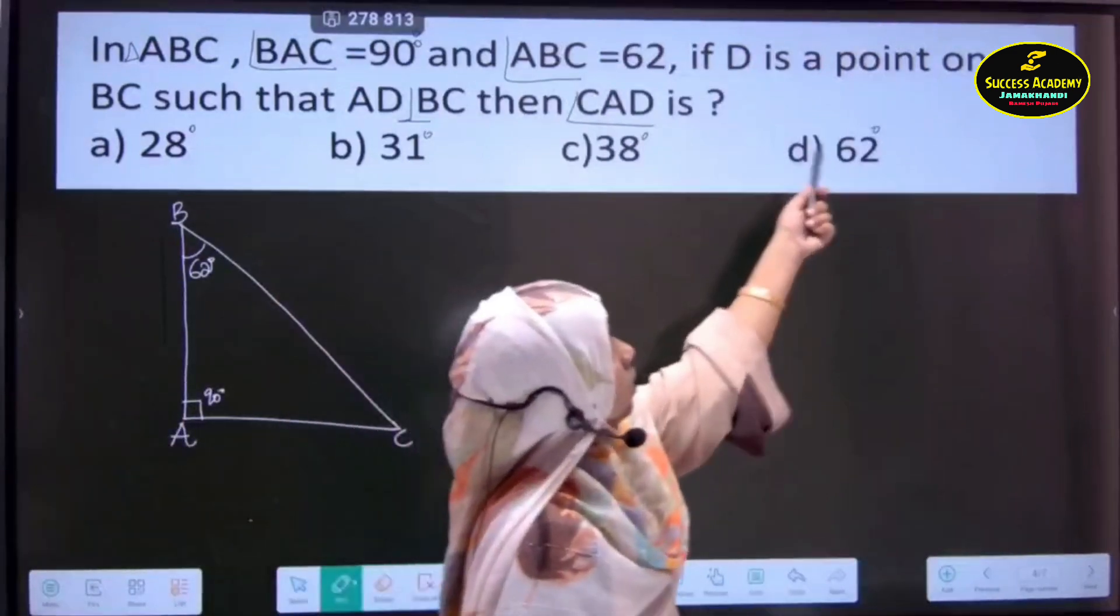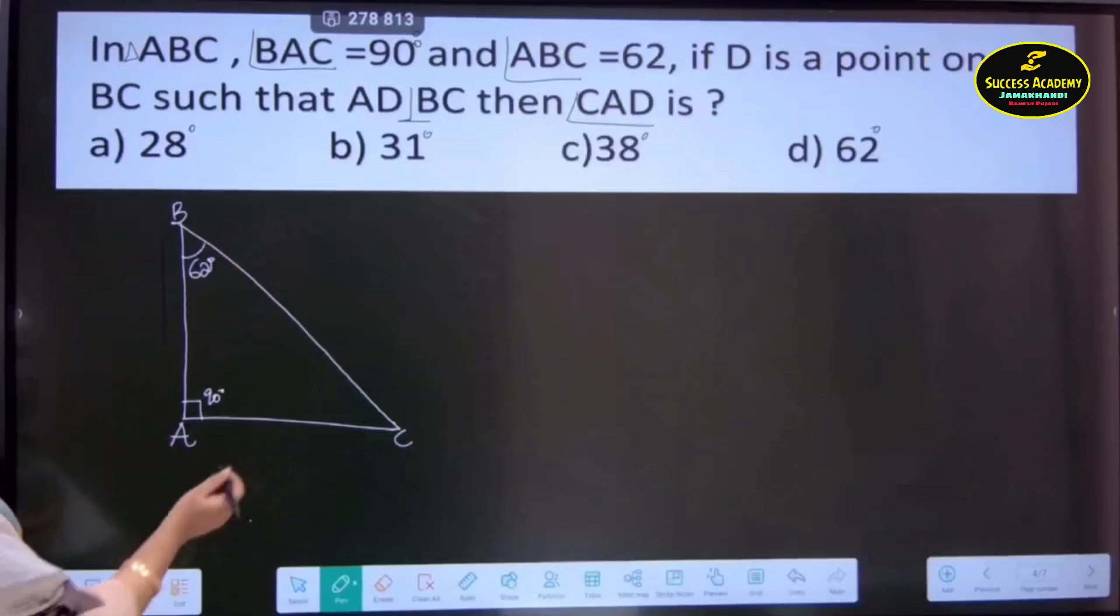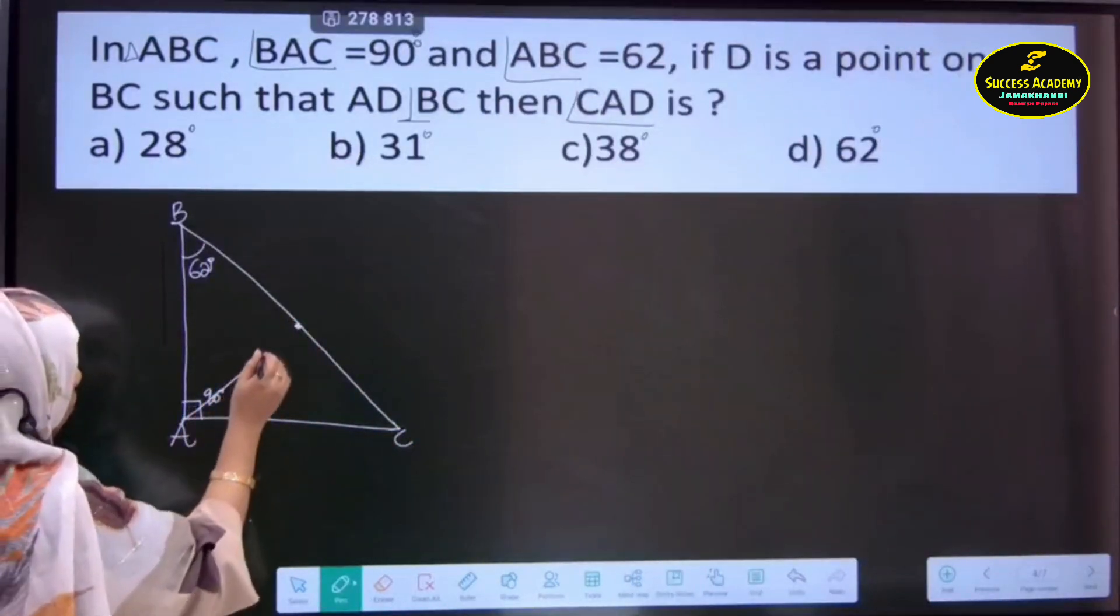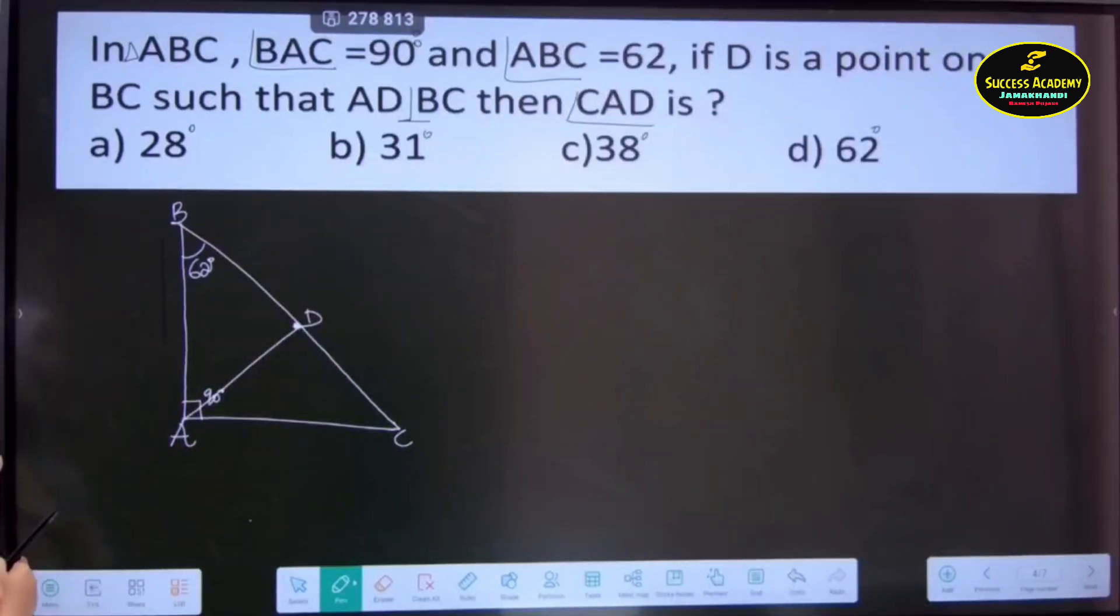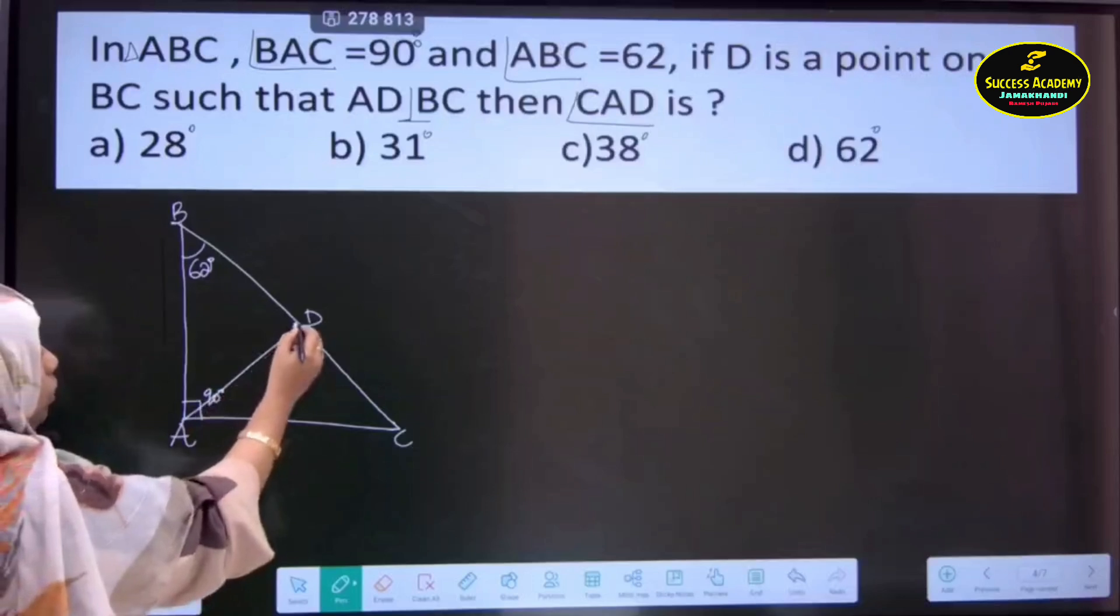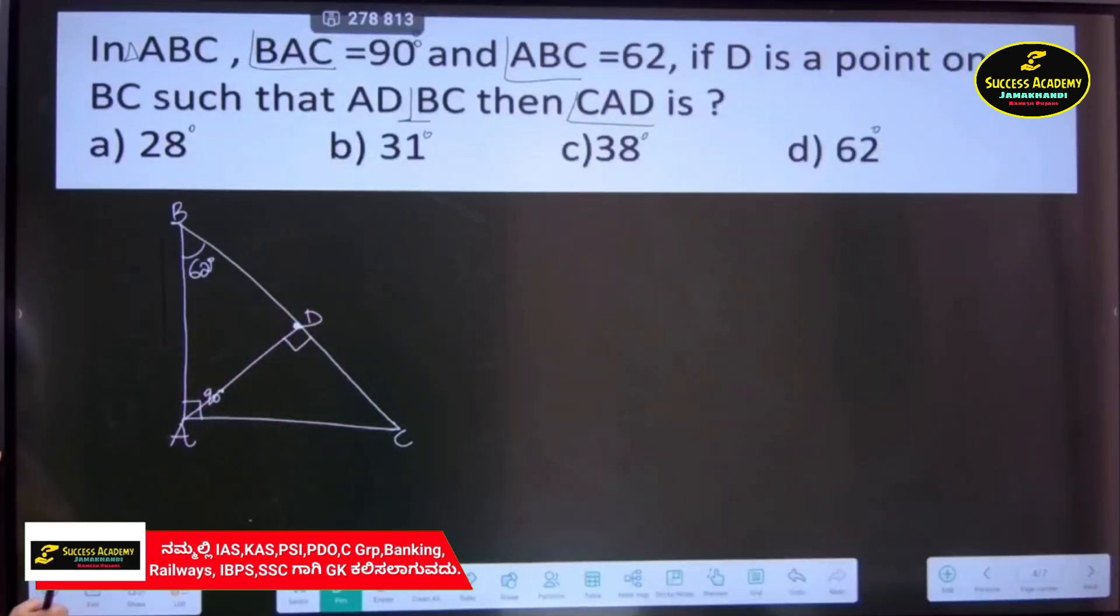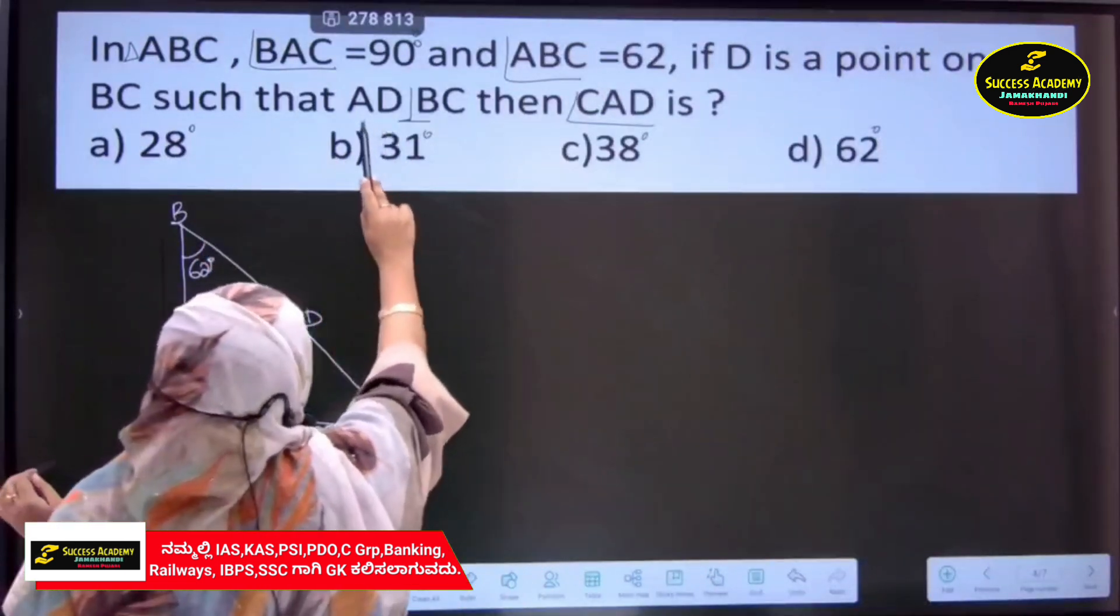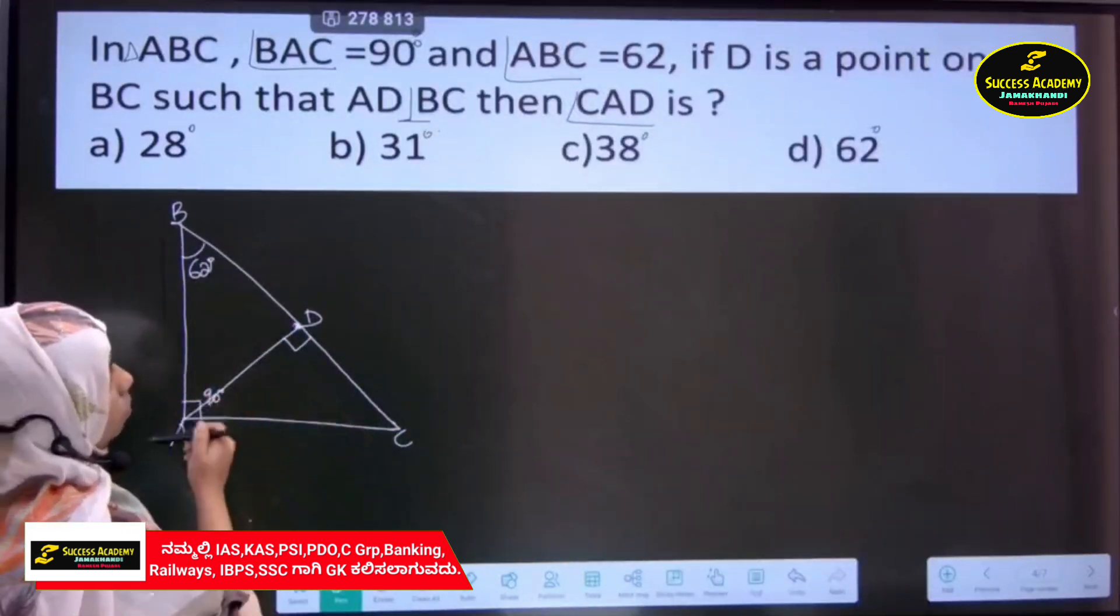Further, if D is the point on BC, where is the point D? On the line BC is somewhere. Point D is on the line BC. It is perpendicular in the sense making an angle of 90 degrees. Then, D is a point on the BC such that AD is perpendicular to BC. We can see clearly AD is perpendicular to BC.